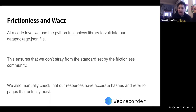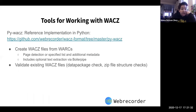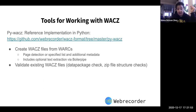We're trying to conform the data package to Frictionless standards and also include metadata that users might find particularly useful for archiving and researching. For tools: we have pywacz, which is the reference implementation in Python. It allows you to create WACZ files from WARCs, with page detection or a specified list, additional metadata, and optional text extraction via Boiler Pipe. It will also validate existing WACZ files using the Frictionless check.